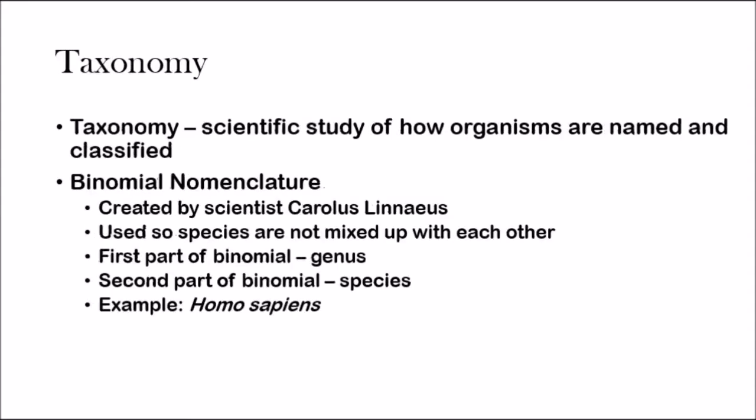Taxonomy is the scientific study of how organisms are named and classified. It's important to classify organisms in order to keep a collection of all the species we know today. The first thing about taxonomy is binomial nomenclature. This was created by the scientist Carlos Linnaeus, and it's still used today so that species are not mixed up with each other.